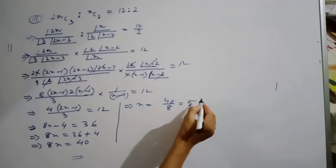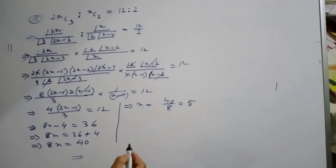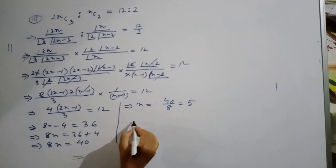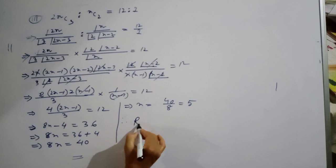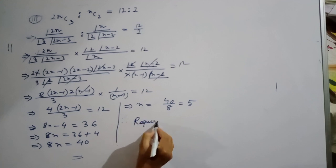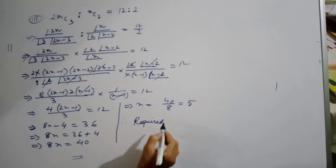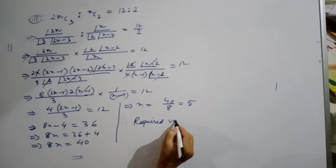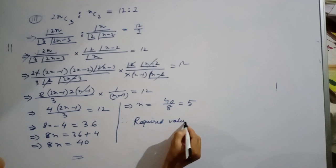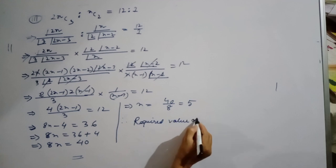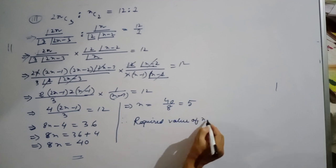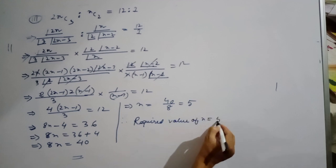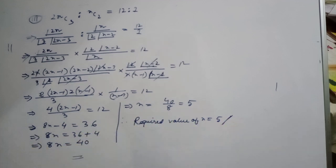40 divided by 8 is equal to 5. Therefore the value of n is equal to 5.